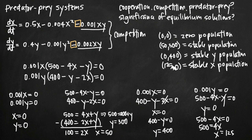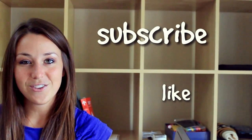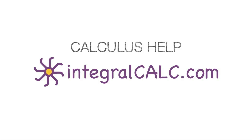To recap: we covered how to find equilibrium solutions and the significance of each one. We discussed how to determine whether a system represents cooperation, competition, or a predator-prey system. And earlier we covered how to determine which variable represents predator or prey, and whether growth of either is restricted only by the other or by some other food source in the environment. I hope you found that video helpful — like and subscribe to be notified of future videos.